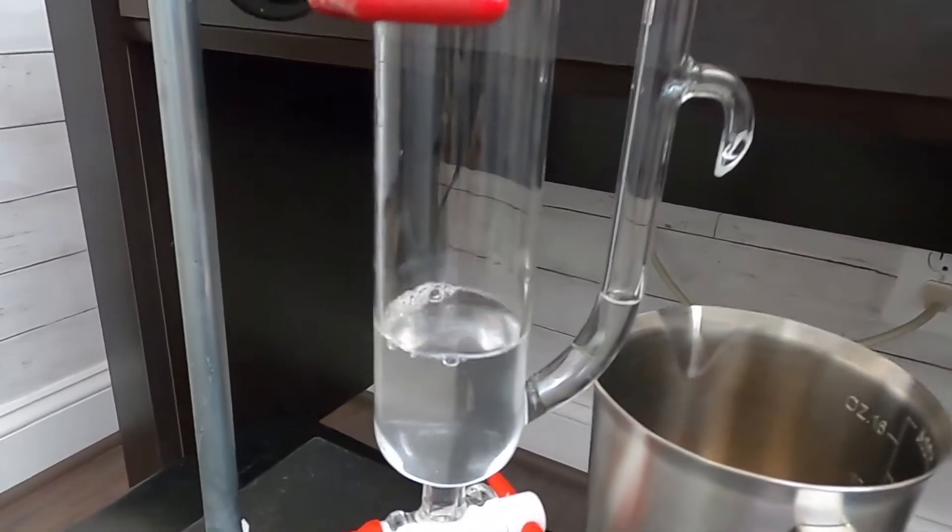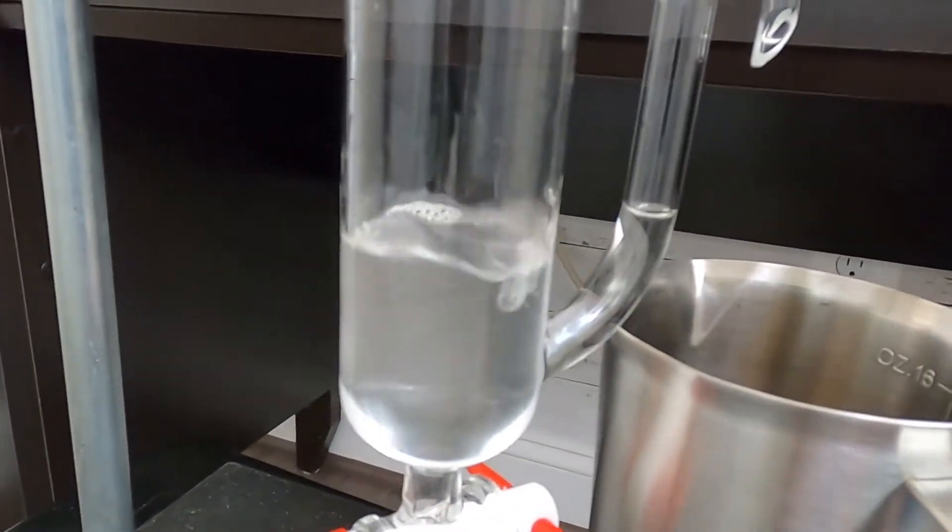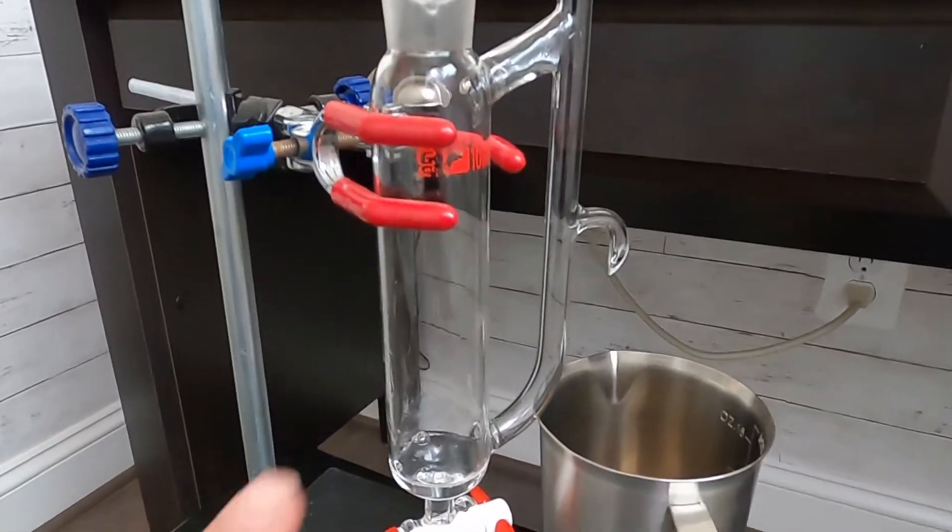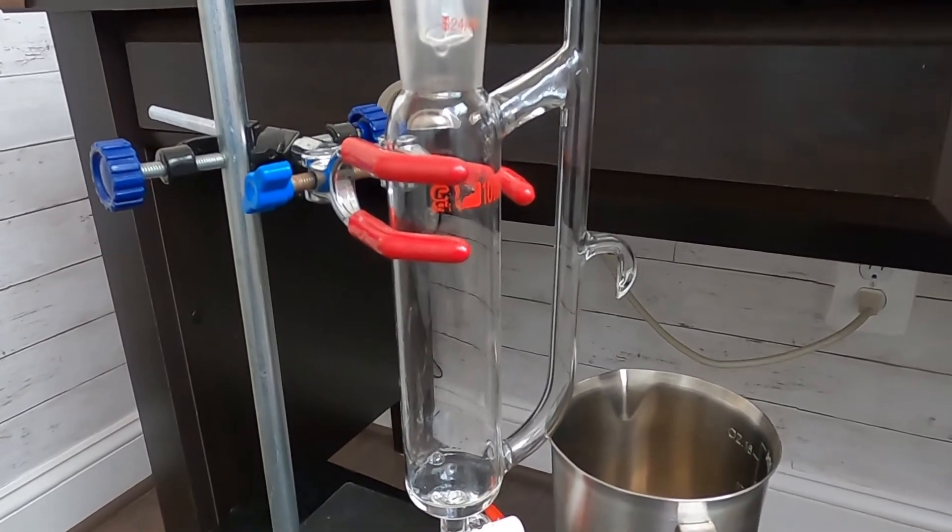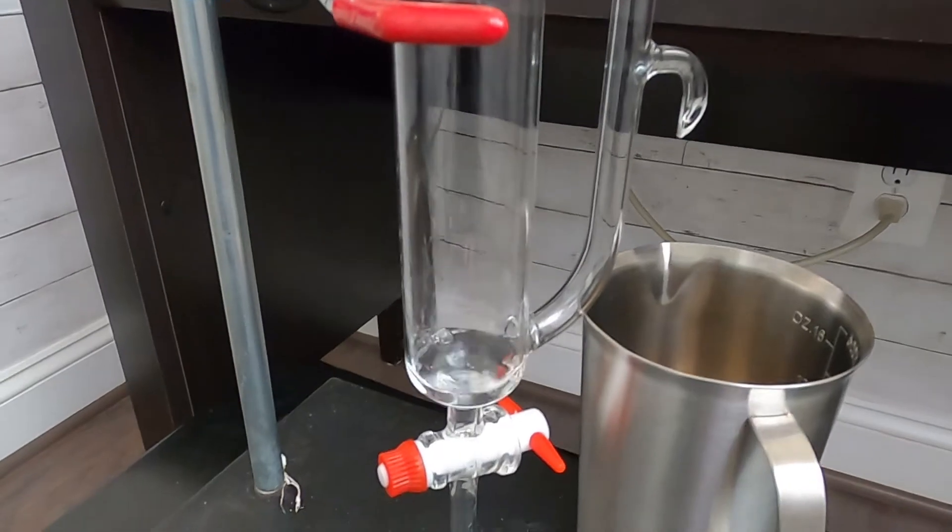The distillate then goes to this device to collect everything. This glassware is called an essential oil and hydrosol separator.